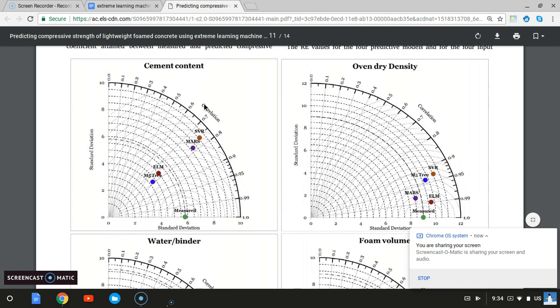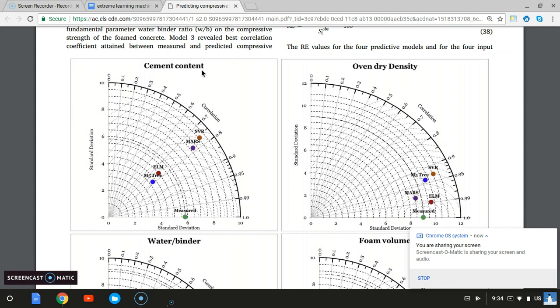Here, for example, in this one, cement content is predicting concrete strength, and you can see four different models that they're comparing.